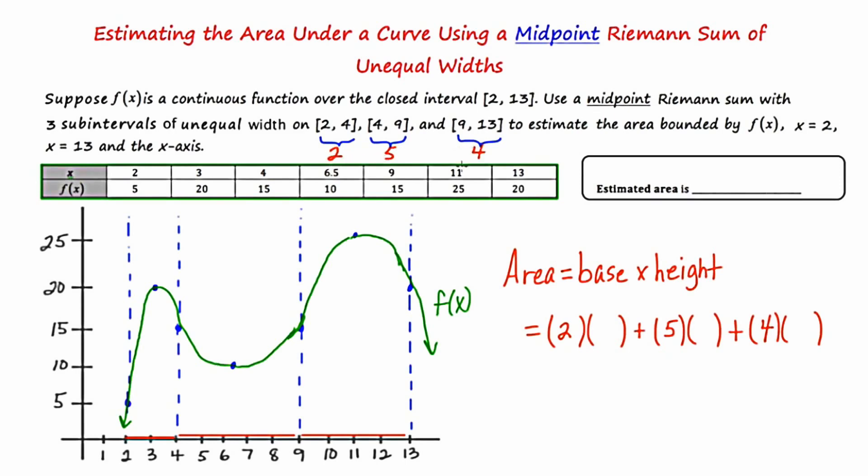Now we need the height. Because we're using a midpoint Riemann sum, we're going to look to the midpoint of each of these spans. So our first interval is from 2 to 4, and the midpoint of that would be 3. So I'm going to cap off the rectangle here, and that value is 20.